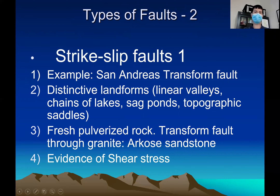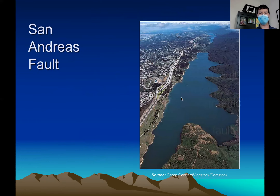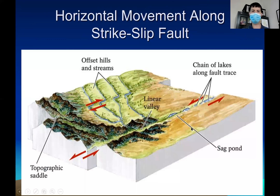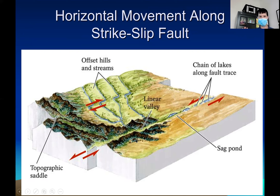The last one is probably the easiest — strike-slip fault. Strike-slip fault is basically what we think about with transform faults or transform boundaries. A strike-slip fault is where there's no slant in the ground and everything is moving side by side. You can see offset hills and streams — the streams are kind of offset from each other, and these valleys used to be connected but now everything's shifted a little bit.